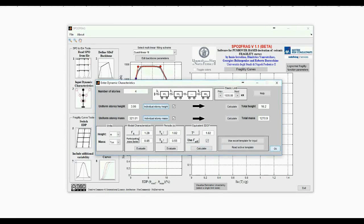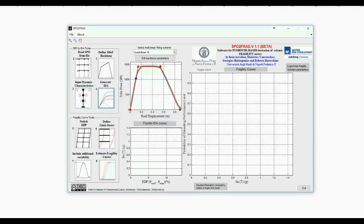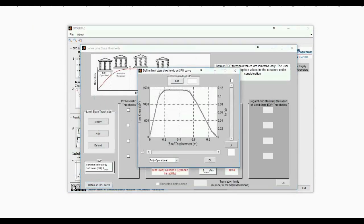We now press the Generate IDA button, obtaining 3 IDA fractal curves, and go on to Define Limit States. Using the Define on SPO curve button, for the fully operational limit state threshold, we choose a point on the pushover curve up to which behavior is almost linear.